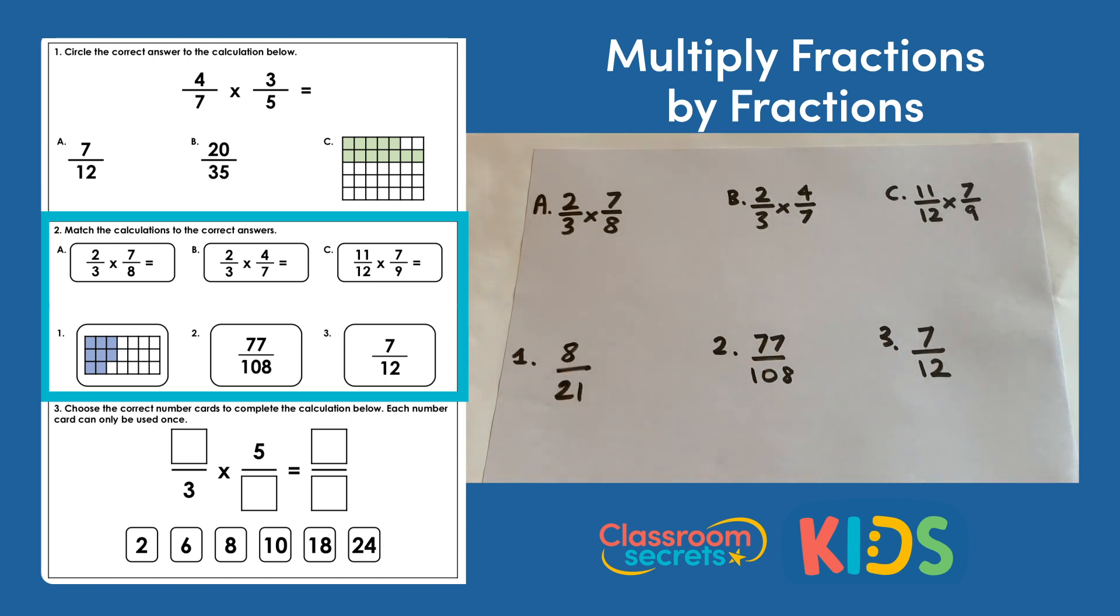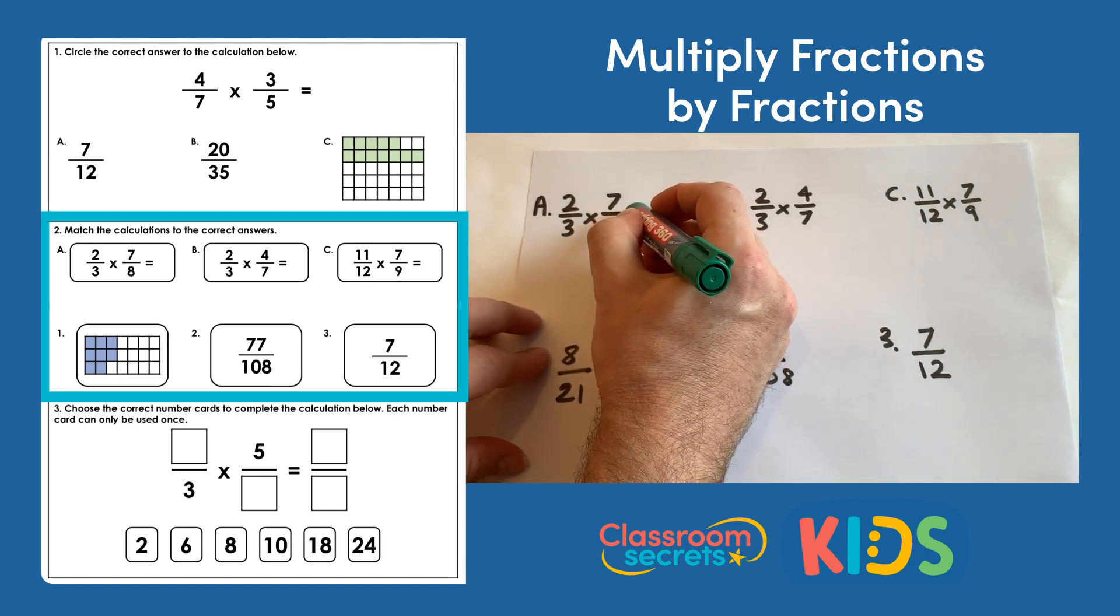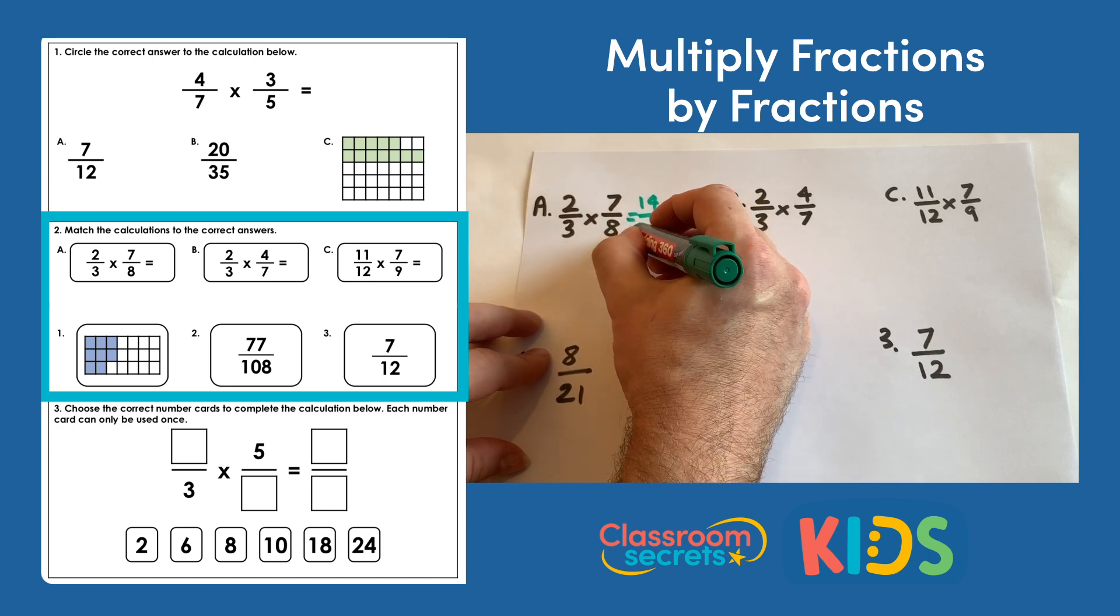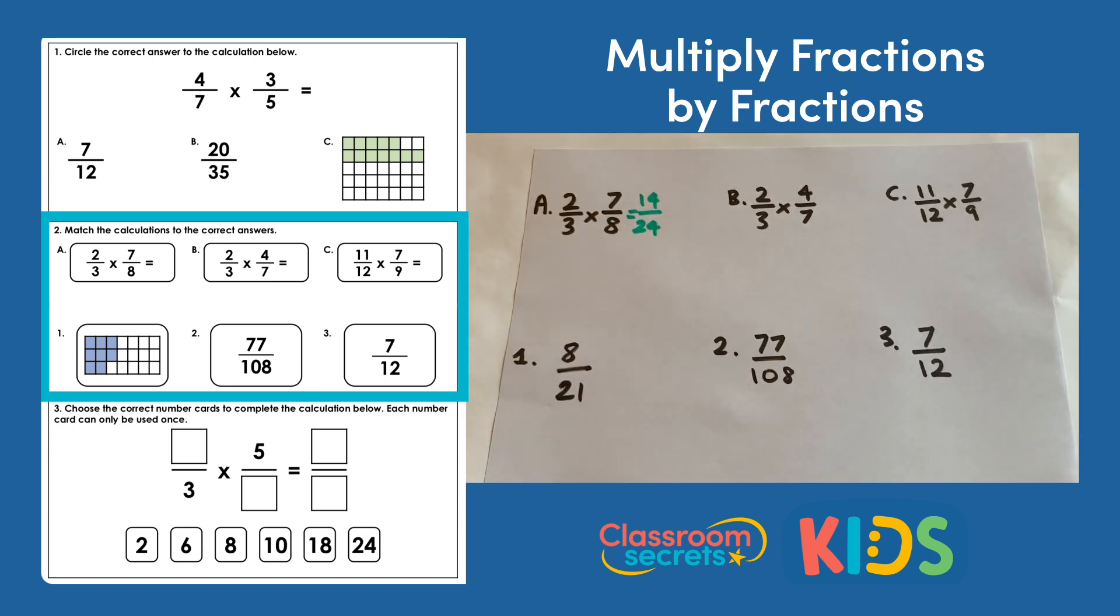So if we carry out the multiplications, we should hopefully be able to match them up to the answers here. We'll start with 2/3 multiplied by 7/8. If we multiply the numerators first, 2 multiplied by 7 will be 14, and 3 multiplied by 8 will be 24.